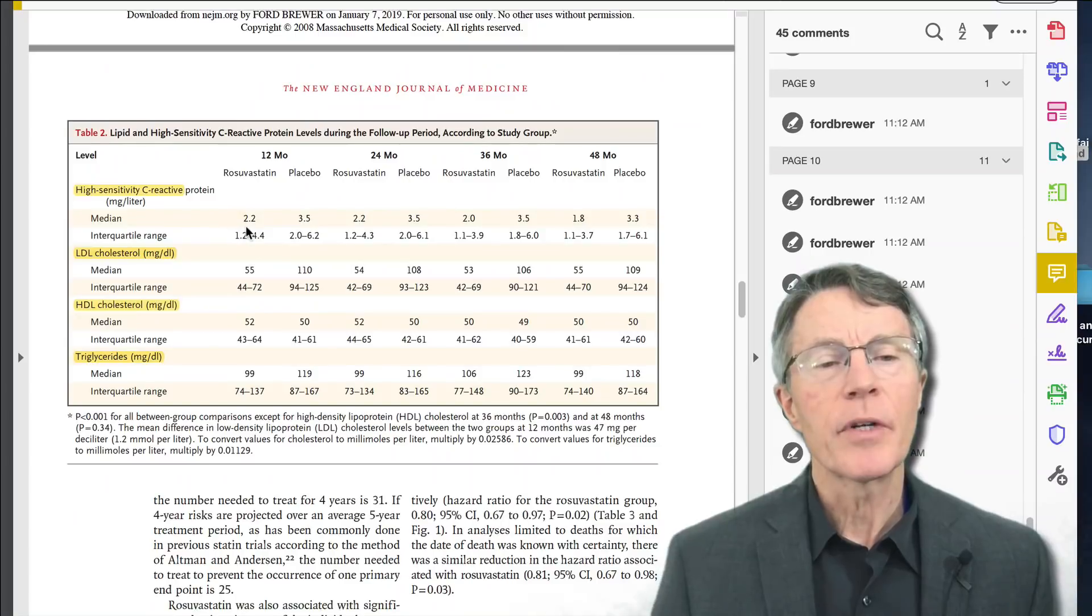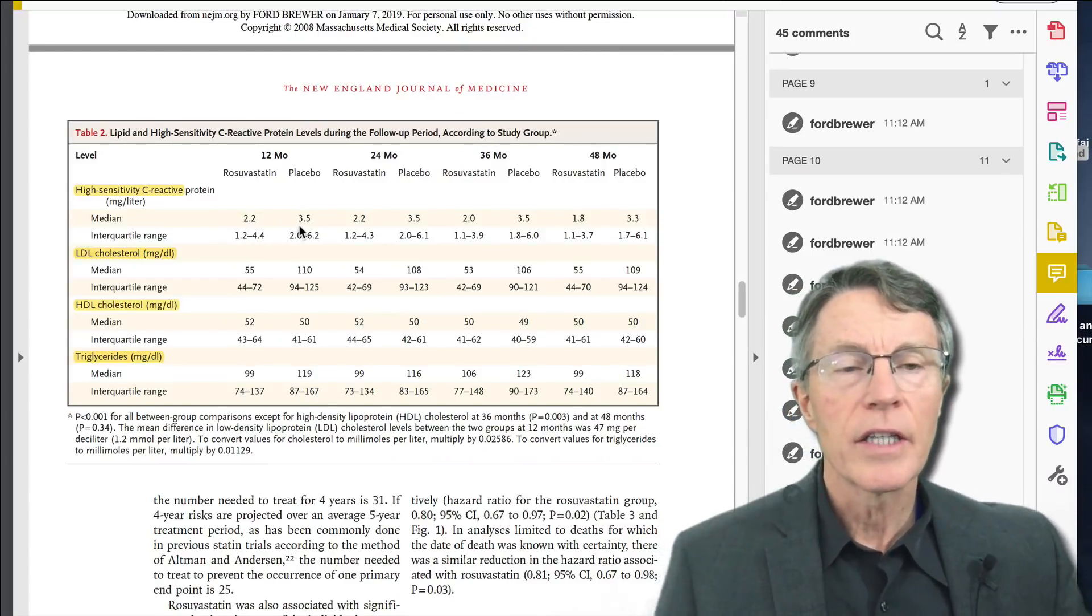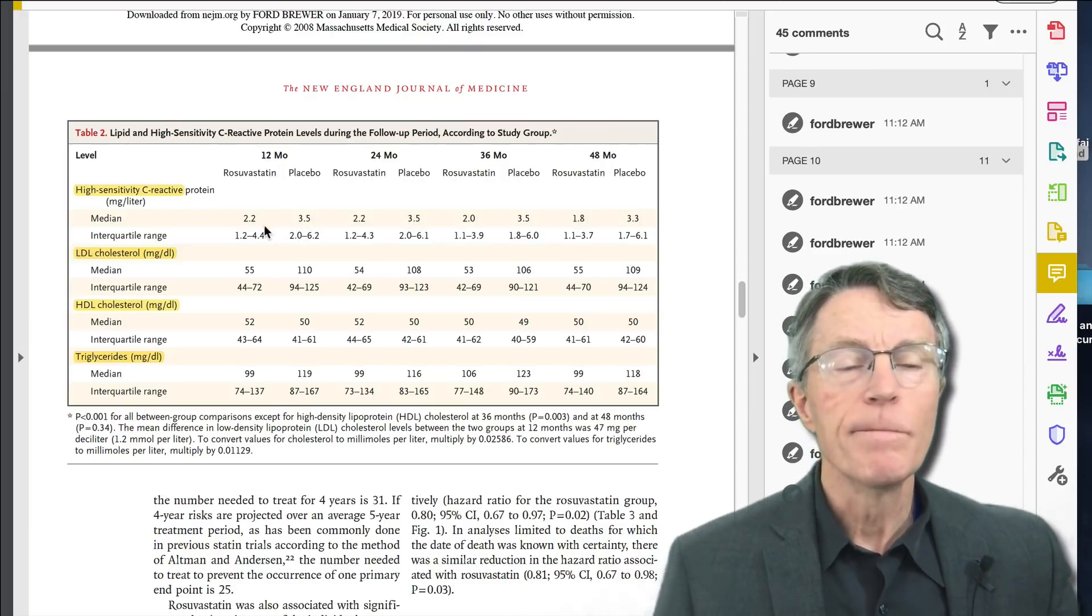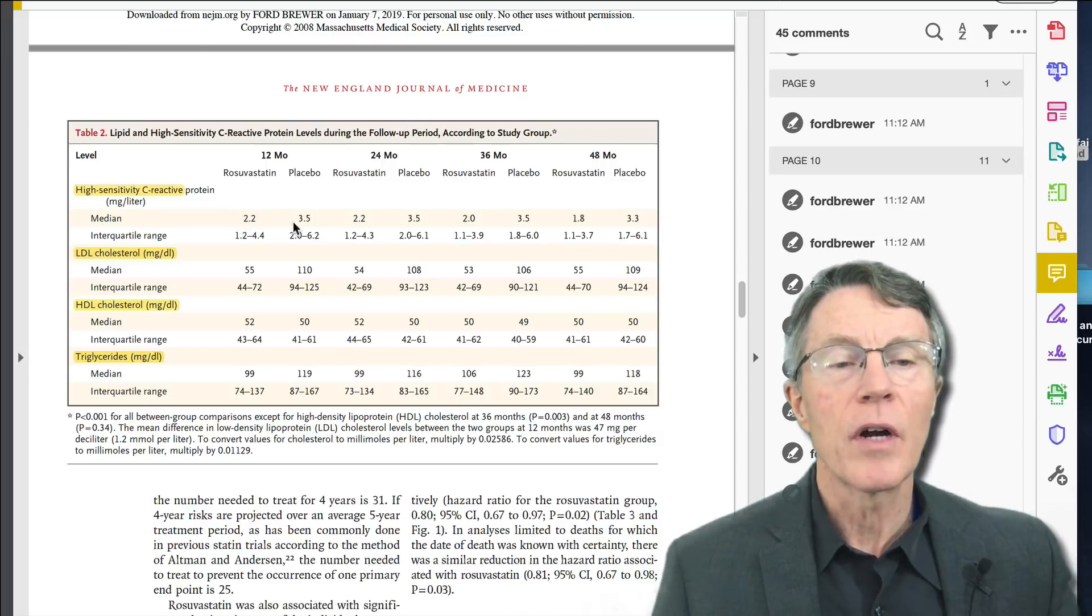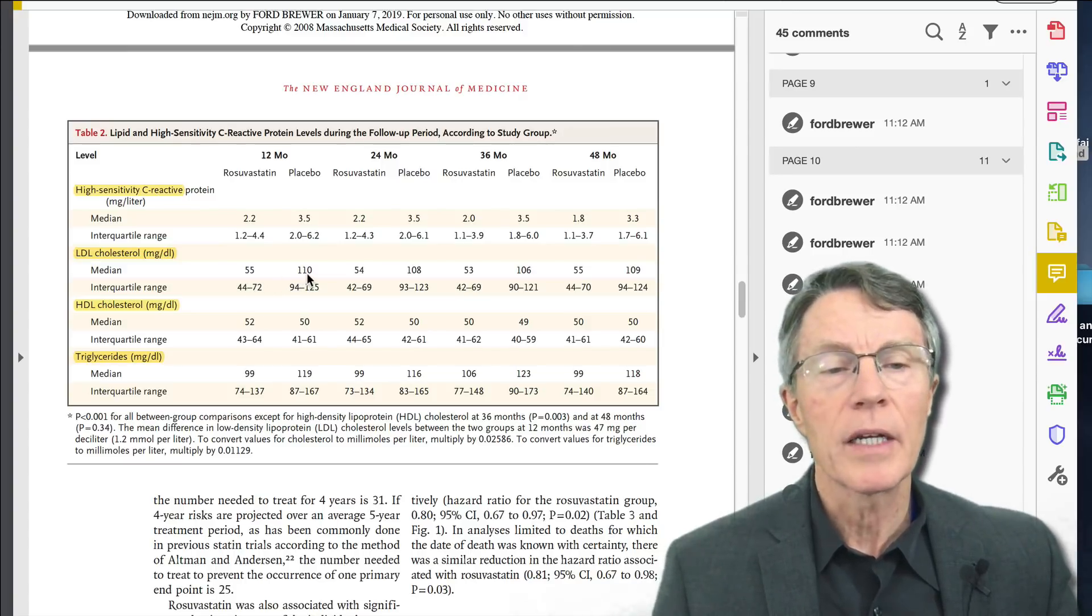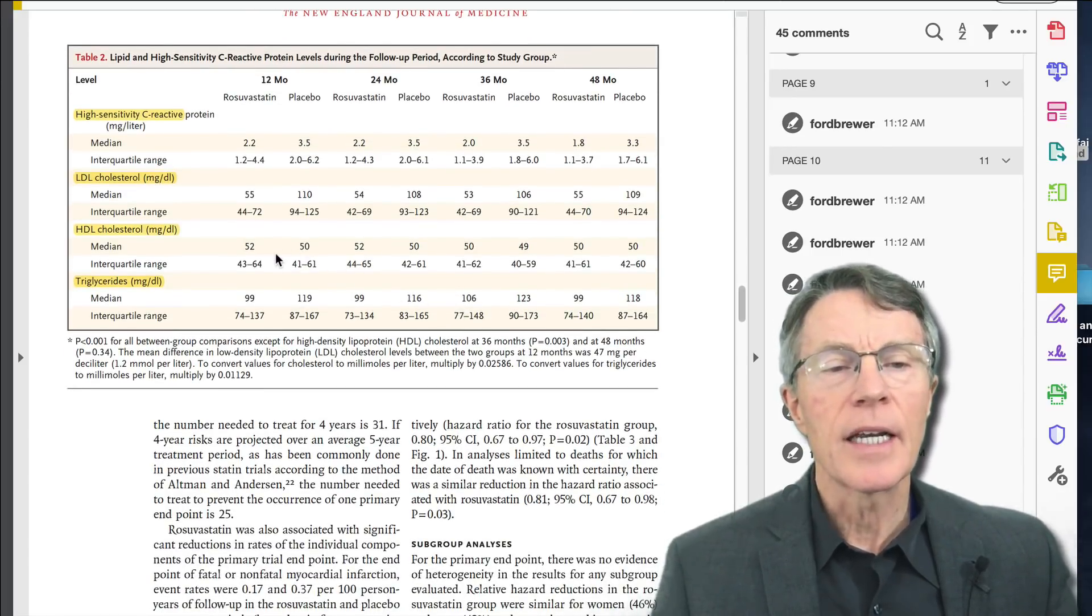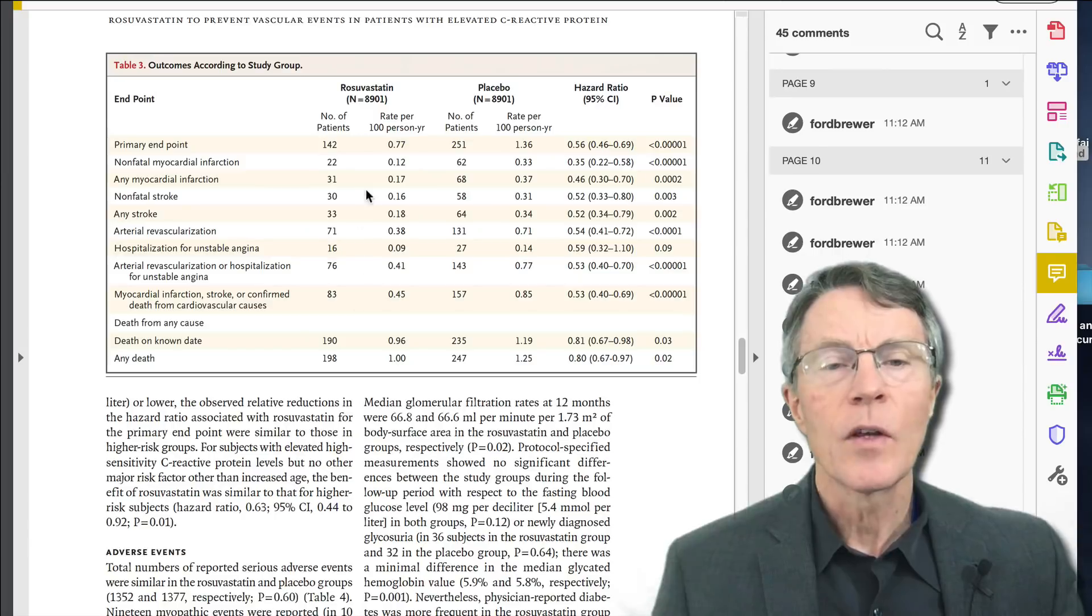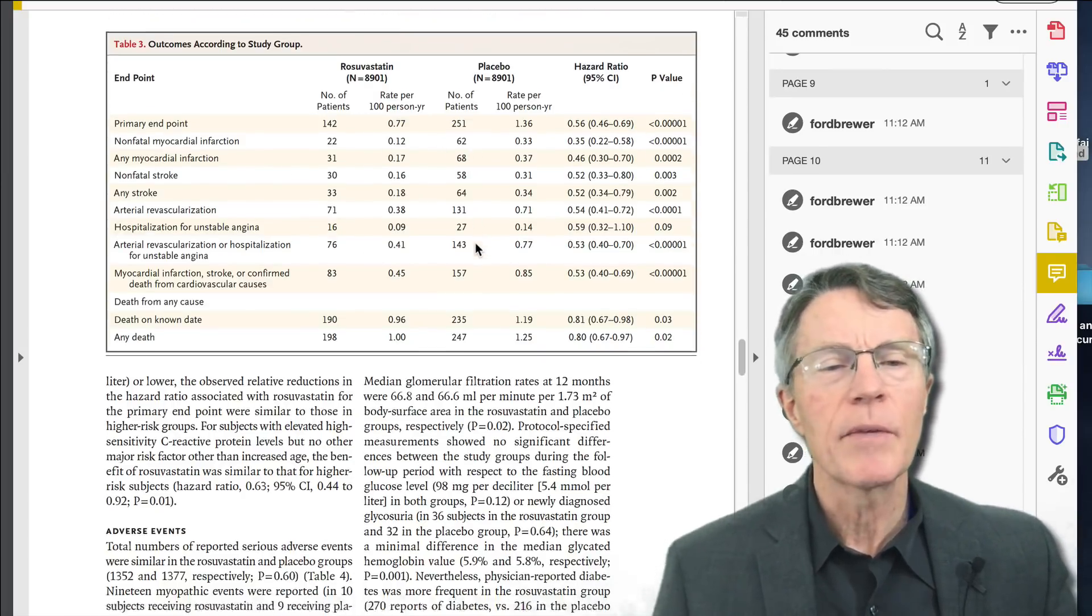Now C-reactive protein. This is what happened during the study. 12 months, 24 months, each year during the study. In the rosuvastatin group, CRP dropped from 3.5 down to 2 or even less. LDL dropped, which you might expect, from an average of over 100 to in the 50s. HDL stayed about the same, about 50. And triglycerides dropped from the 120s level to about a hundred. So what happened in terms of heart attack and stroke? We've already read that. I'm not going to go over that again.